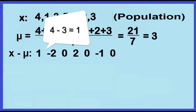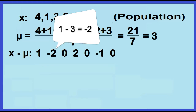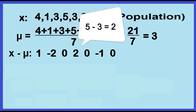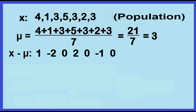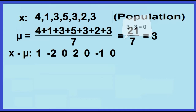4 minus 3 is equal to 1. 1 minus 3 is equal to negative 2. 3 minus 3 is 0. 5 minus 3 is equal to 2. 3 minus 3 is 0. 2 minus 3 is negative 1. 3 minus 3 is 0.